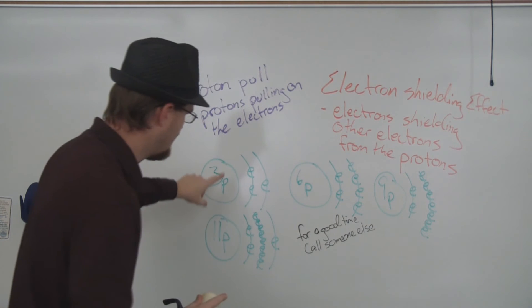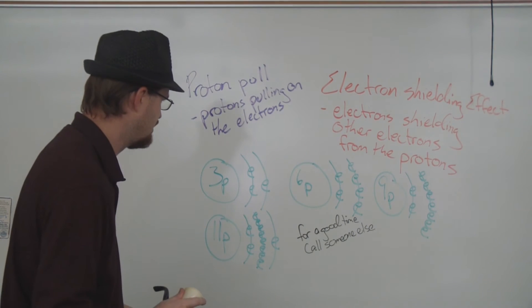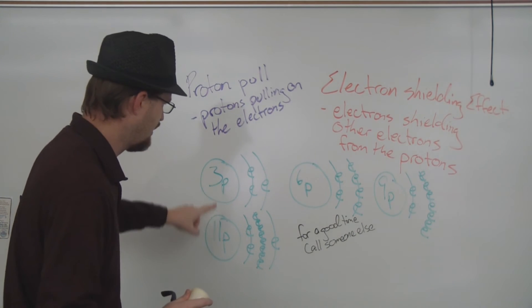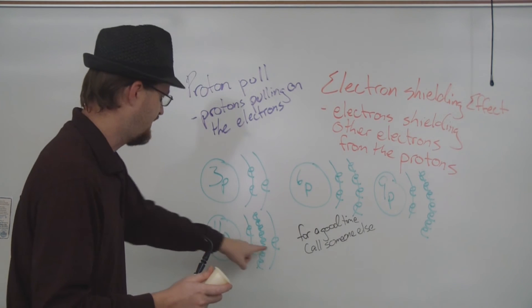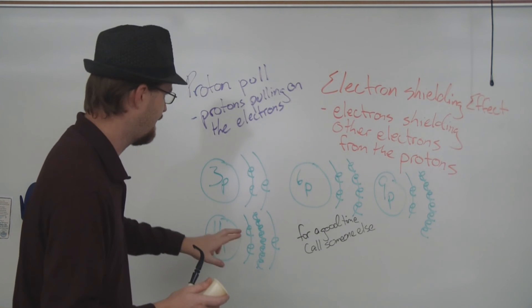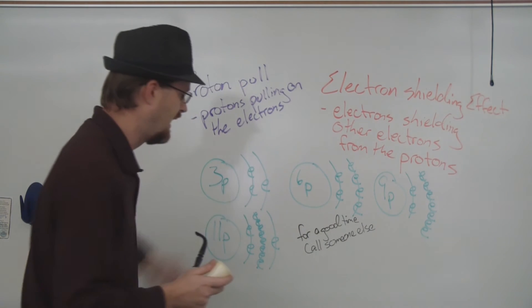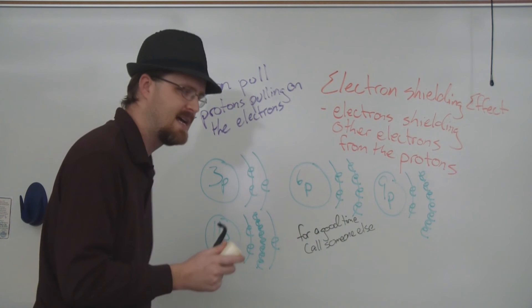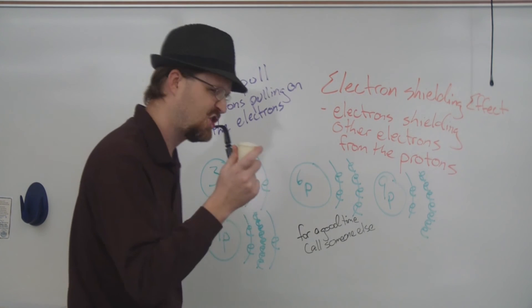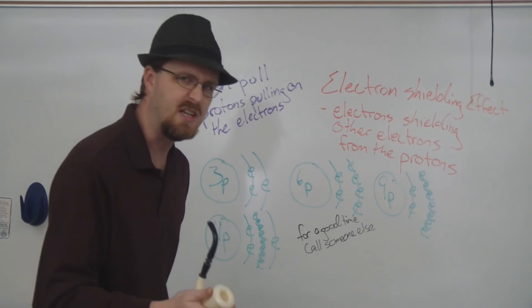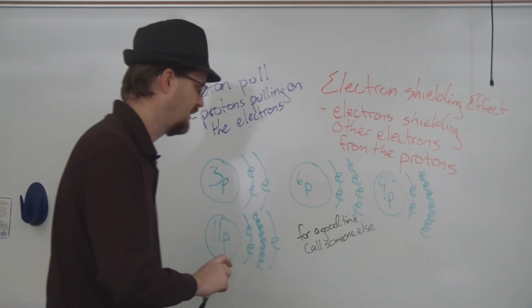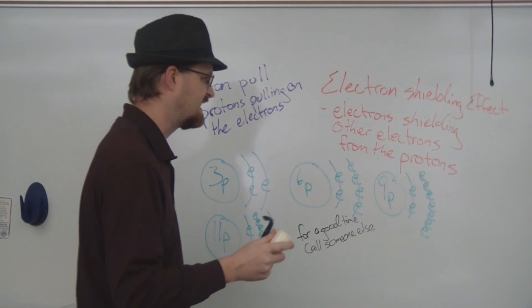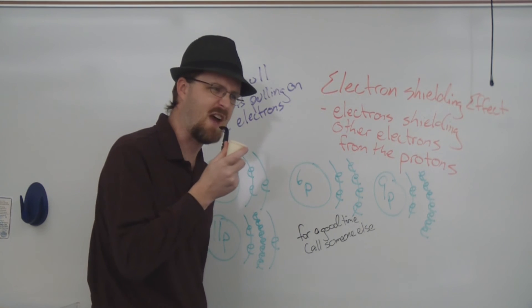But when we go down an energy level, even though we are adding more protons, this valence electron, instead of having two electrons in front, now has ten electrons shielding it from the nucleus, thus decreasing the proton pull and increasing the electron shielding effect.